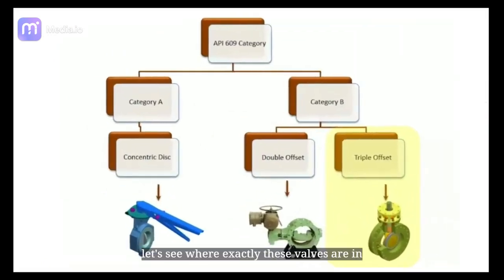Let's see where exactly these valves are in terms of applicable standards. API 609 category B is the main one. Of course, AWWA C504 and MSS SP67 are other applicable standards for offset butterfly valves.